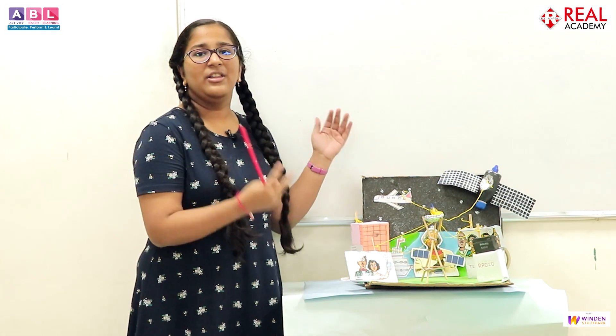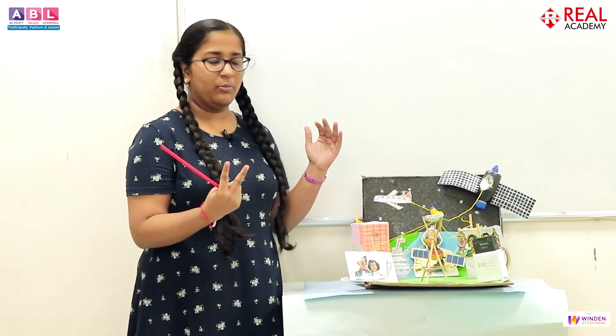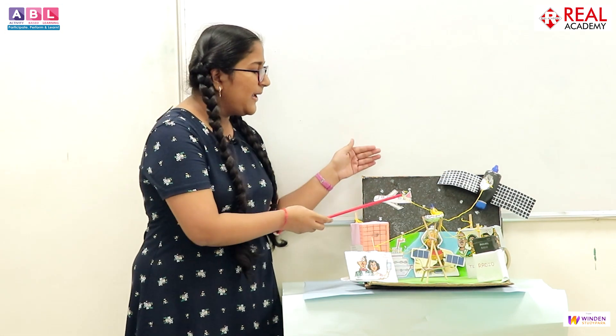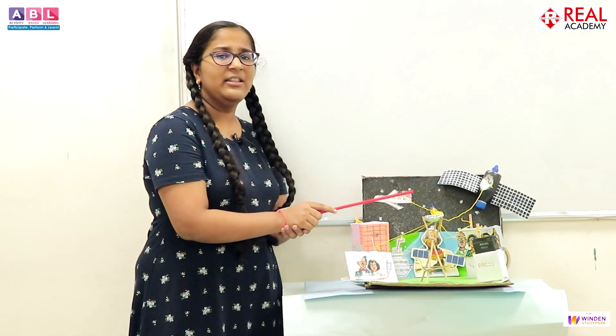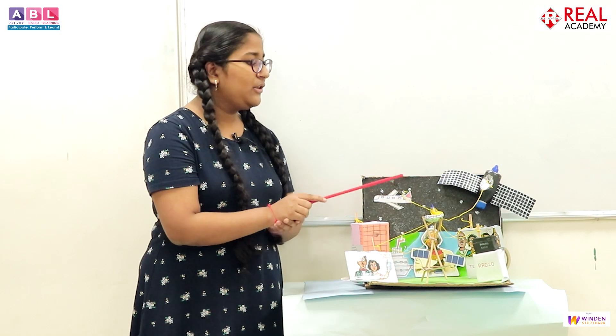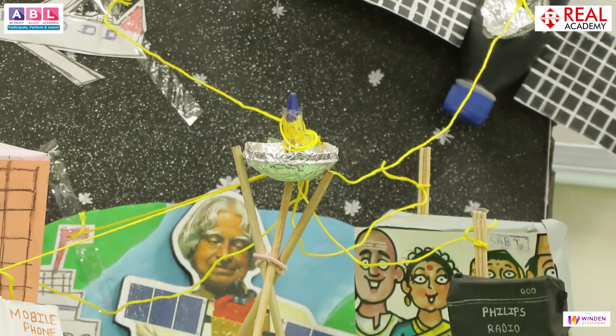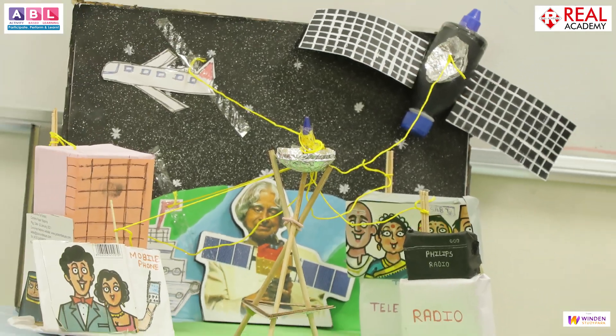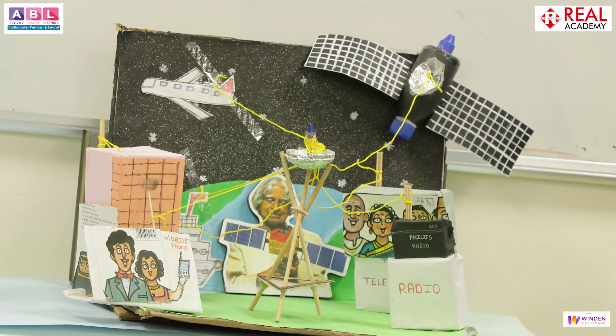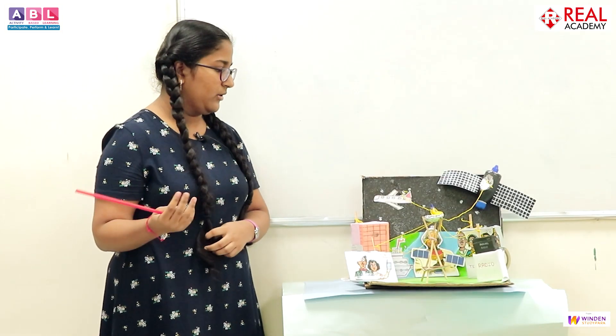Satellite communication is divided into two parts: the space segment and the ground segment. Here, this is the antenna — a metallic device used for radiating and receiving electromagnetic waves. This is a parabolic antenna. It converts electrical energy into electromagnetic energy.